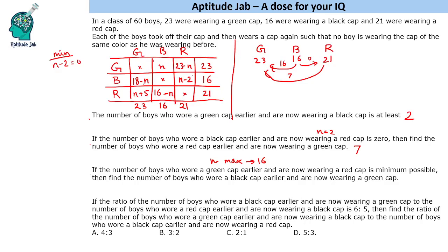The maximum value of n is 16, because at n equals 16 the black-to-green cell (18 minus n) becomes 2, the black-to-red cell (16 minus n) becomes 0, and all cells remain non-negative. If n were 17, the black-to-red cell would be negative. So n_max equals 16, and the question asks for the number of boys who wore a black cap earlier and are now wearing a green cap, which is 18 minus 16 equals 2.